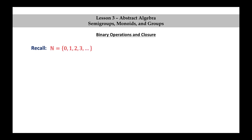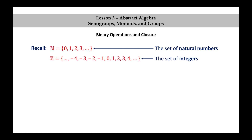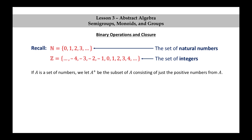Recall, N is the set of natural numbers, and Z is the set of integers. Also, if A is a set of numbers, we let A+ be the subset of A consisting of just the positive numbers from A. For example, Z+ is the set consisting of 1, 2, 3, 4, and so on. N+ is also that same set, so N+ and Z+ are equal.